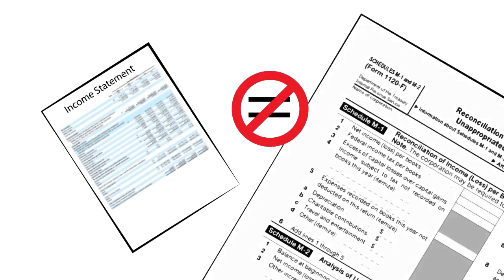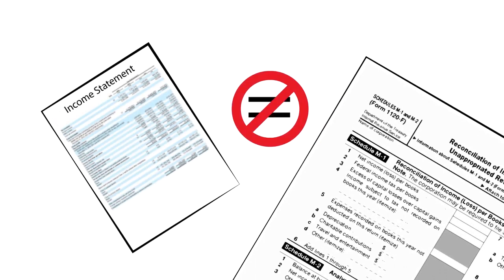You'll notice that the income statement for GAAP purposes won't necessarily agree with the tax return. And of course, we have to fill out a Schedule M1 to explain those differences. When rules for U.S. GAAP differ from U.S. tax laws for an item of income or expense, we have what is commonly called a book-to-tax difference.